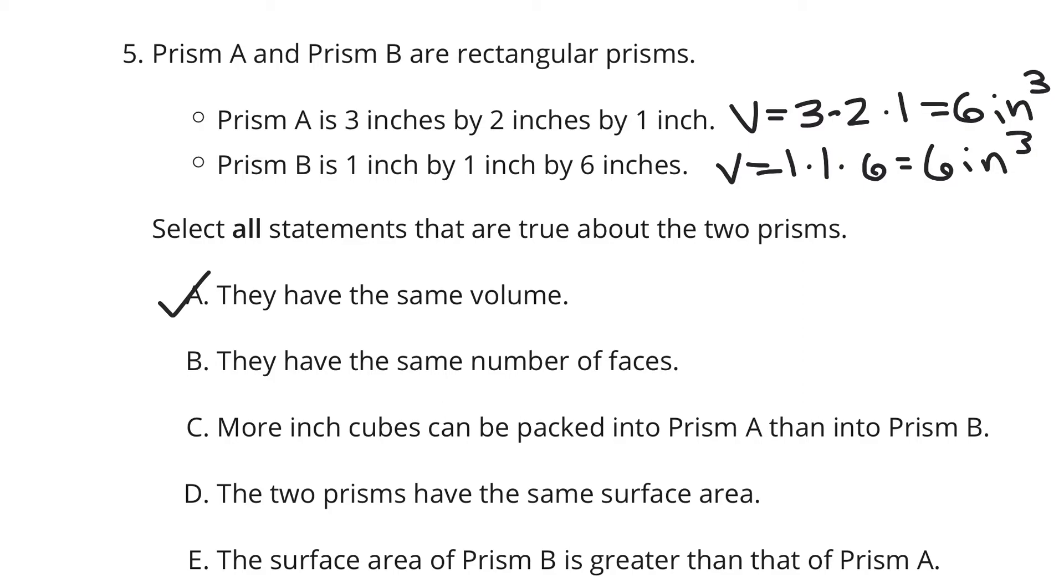What about B? They have the same number of faces. Well, yeah, they're going to have the same number of faces because they're both rectangular prisms. C. More inch cubes can be packed into prism A than prism B. That's actually false. If they have the same volume, you're going to be getting the same inch cubes into one compared to the other.